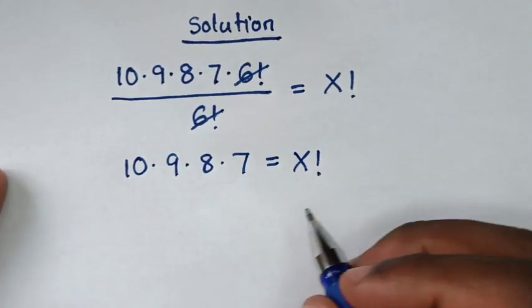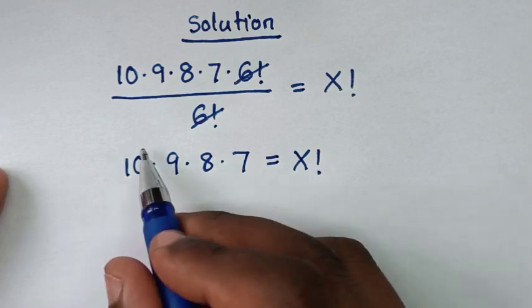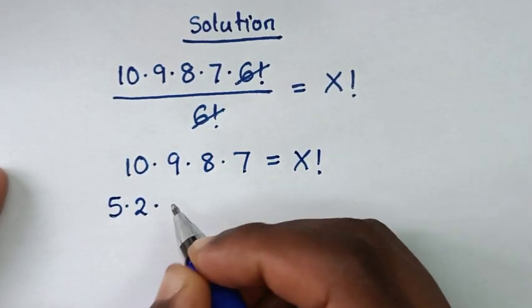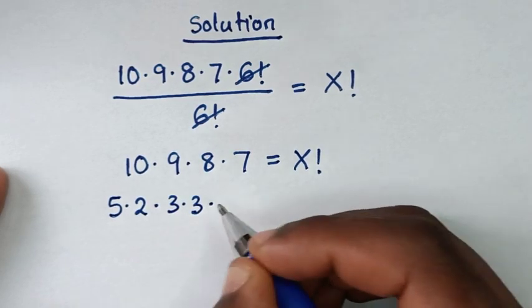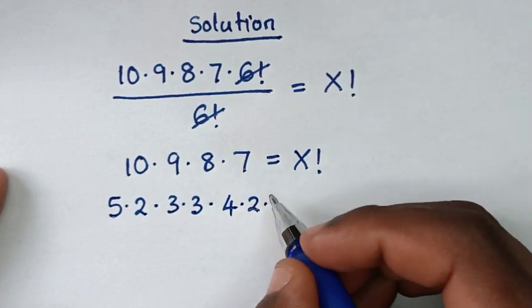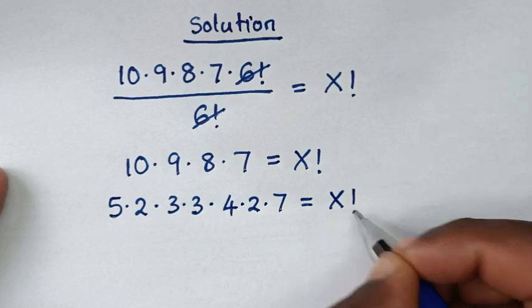Then in the next step, we will split these numbers. 10 is the same as 5 times 2, then times 9, which is 3 times 3, then times 8, which is 4 times 2, then times 7 equals x factorial.